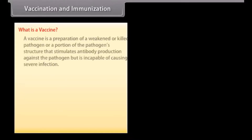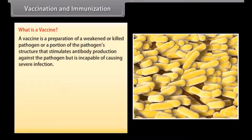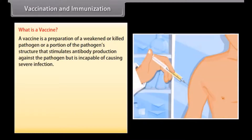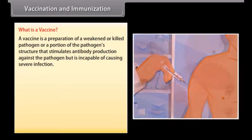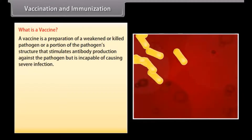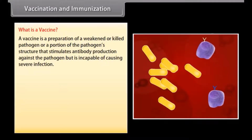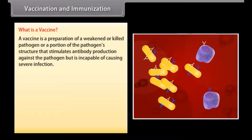What is a vaccine? A vaccine is a preparation of a weakened or killed pathogen, or a portion of the pathogen's structure, that stimulates antibody production against the pathogen but is incapable of causing severe infection.